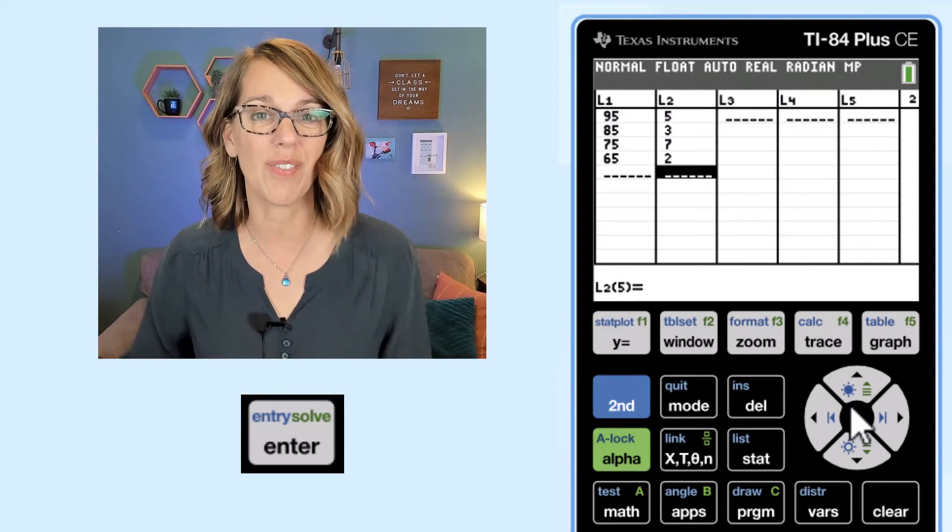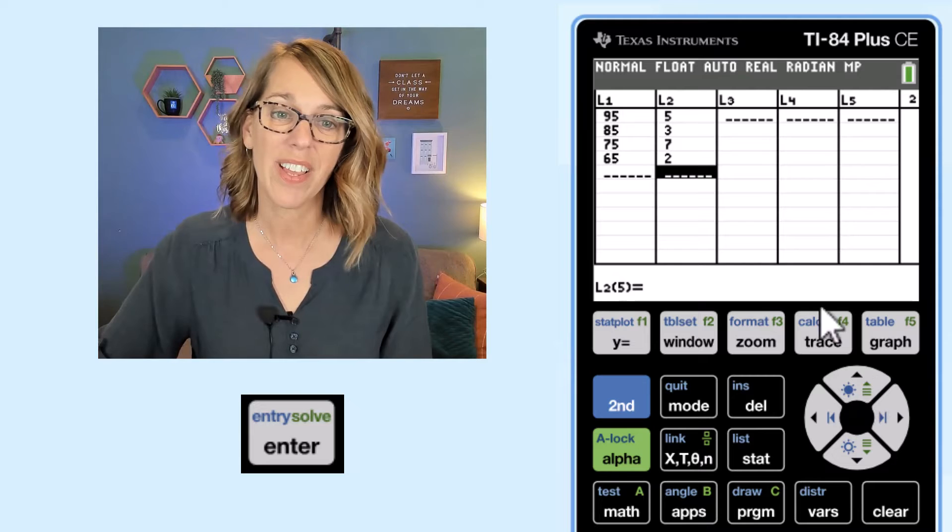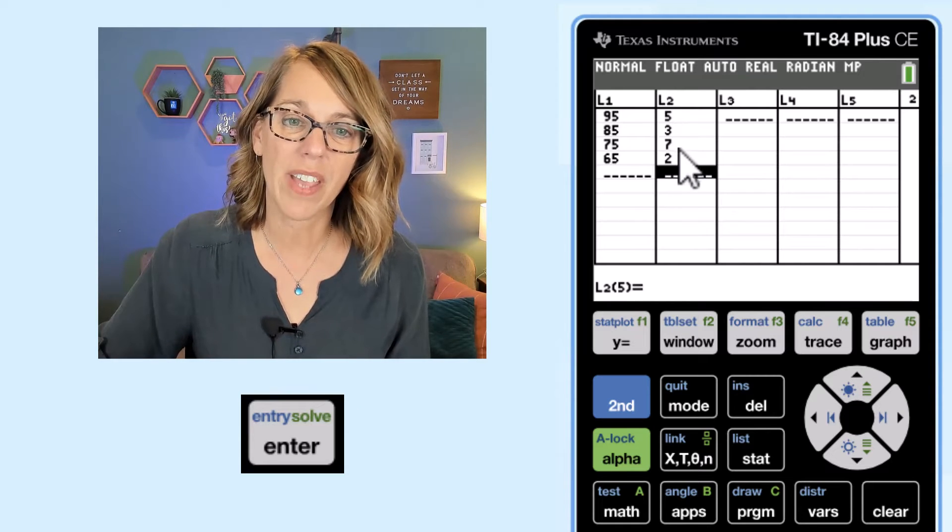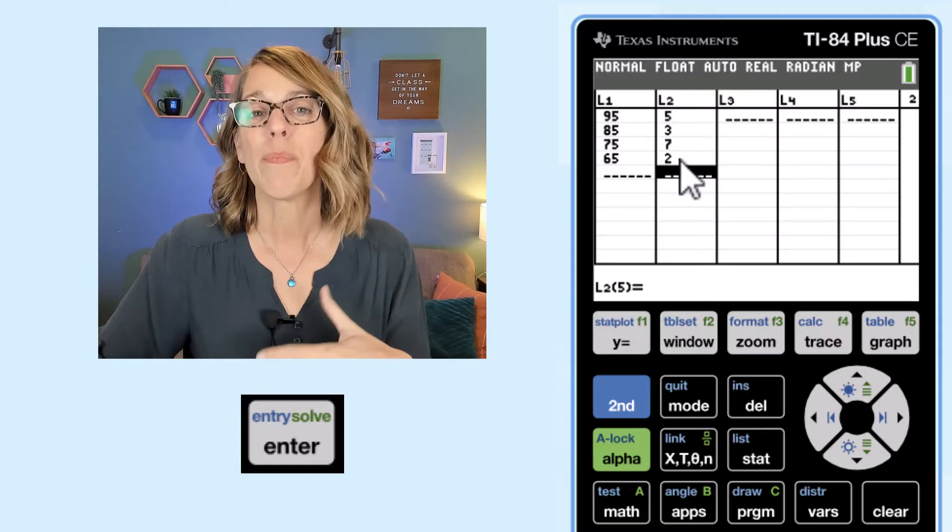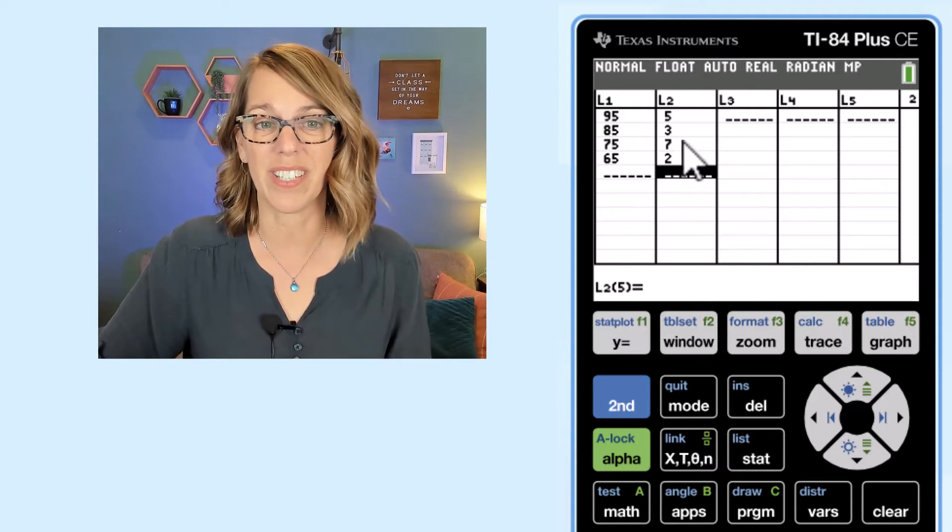And then two students with a 65. So I really have five, three, eight, 15, 17 data values here, but I've just entered them instead with these frequencies.